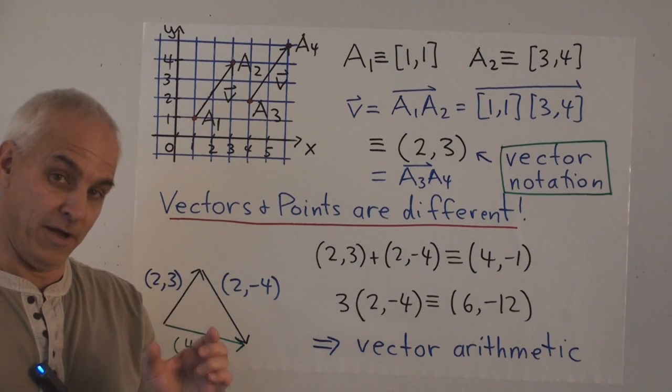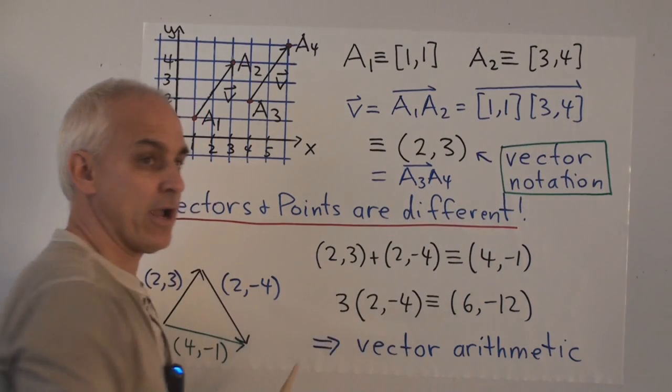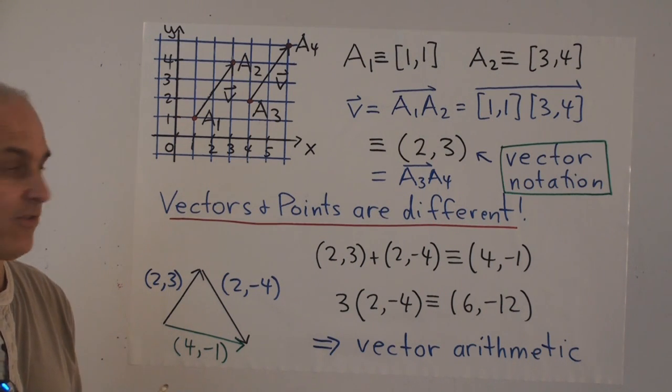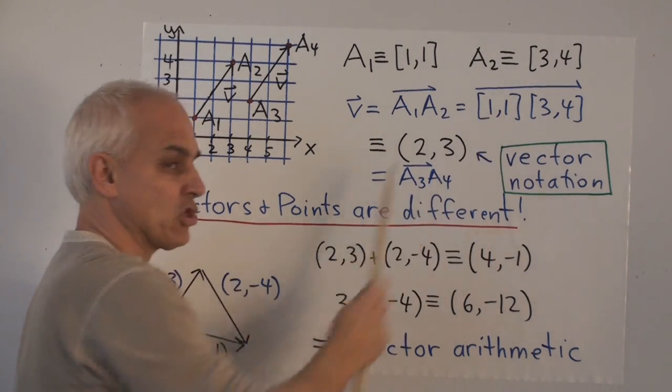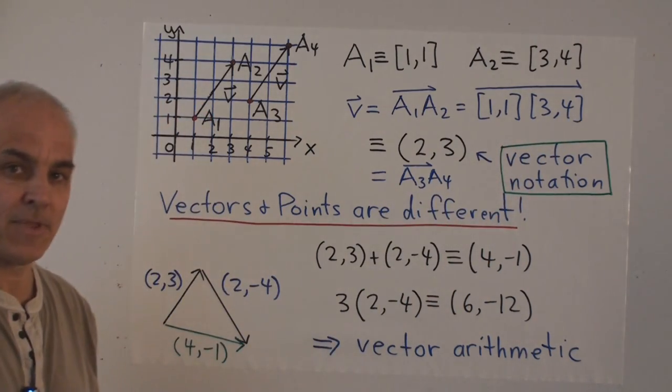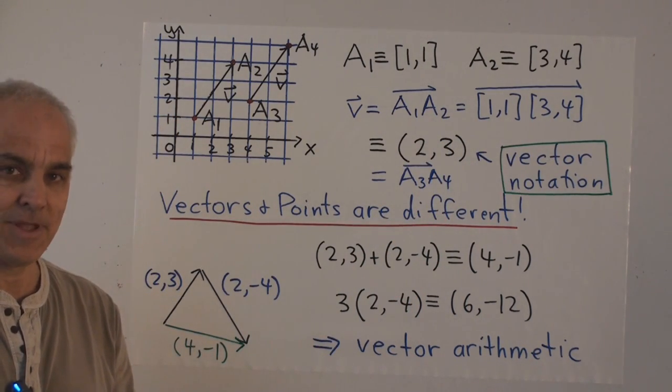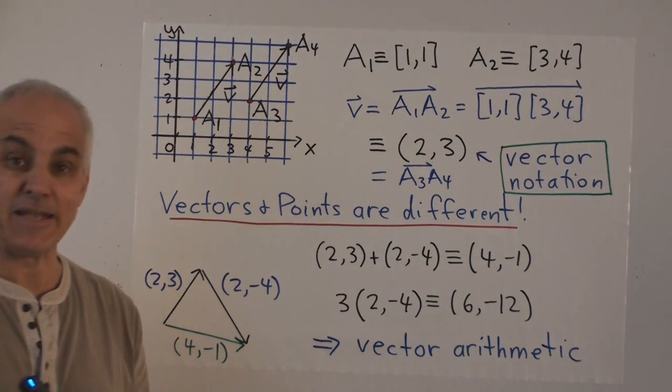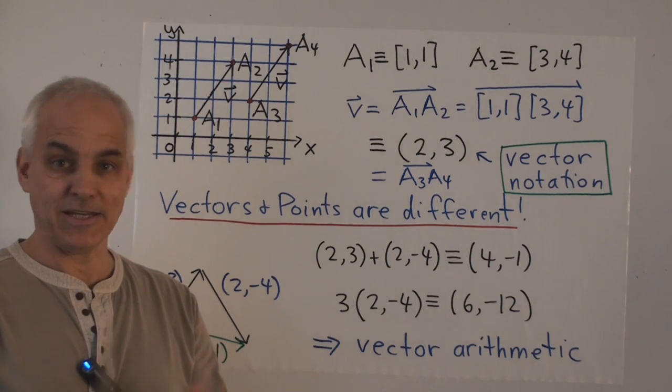Now this is a cumbersome notation. And our notion of equality that we defined last time shows us that it's only the difference between the x-coordinates and the difference in the y-coordinates that really matters. And so we introduce a new type of notation for this vector. We record it by the difference in the x-coordinates, the final minus the initial x-coordinate, and the difference in the y-coordinates, the final minus the initial y-coordinate. And we put those two numbers inside round brackets. That's different from square brackets. So square brackets represent points. Round brackets now represent vectors. This is a very nice notation that keeps these two ideas separate.